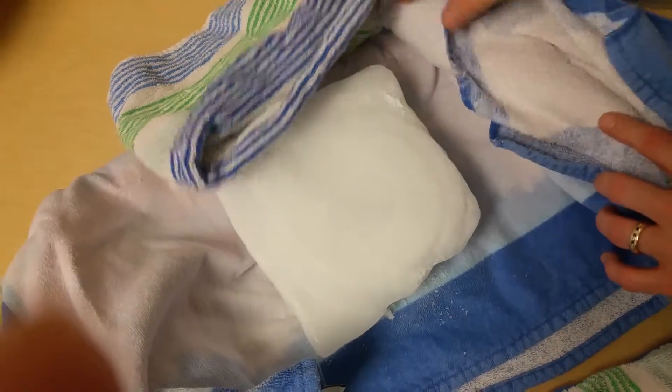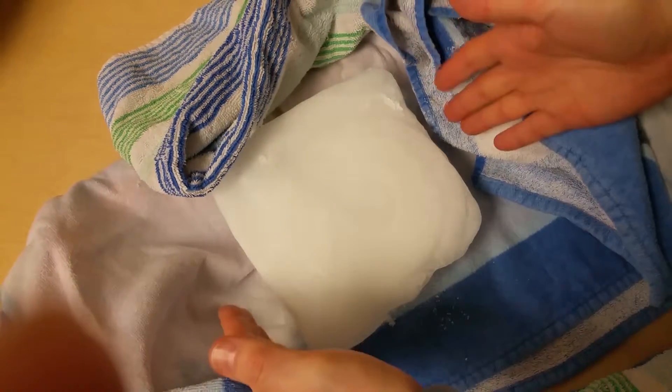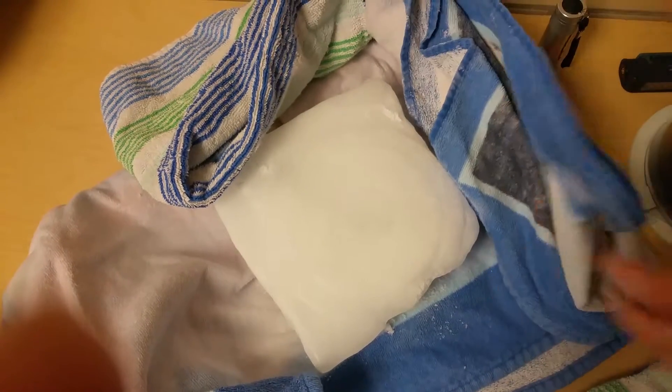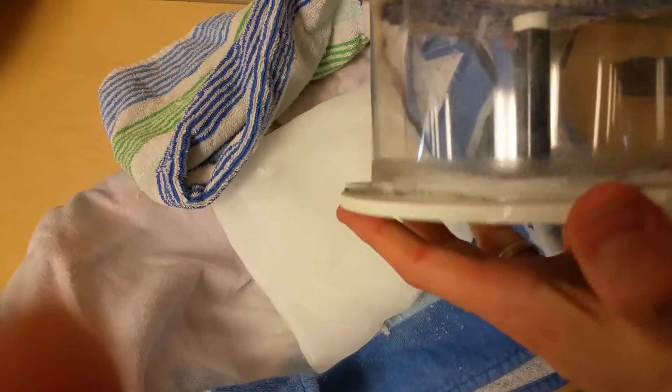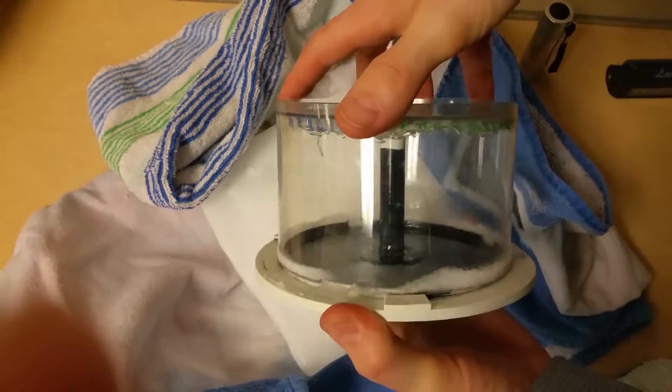Here's how you set up a homemade cloud chamber. First, you take some towels so that you can create an insulated chamber for some dry ice.